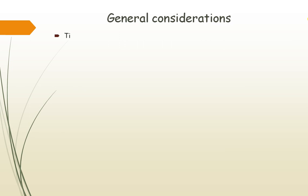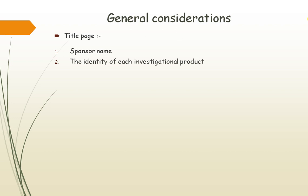Under general considerations, the Investigator's Brochure consists of a title page containing data such as the sponsor's name, the identity of each investigational product including the research number, chemical or approved generic name, or trade name where legally permissible. It also includes the release date and a confidential statement. This confidential statement instructs the investigator or recipient to treat the Investigator's Brochure as a confidential document for use by the investigator team and the institutional review board.